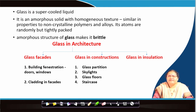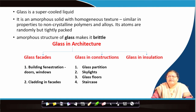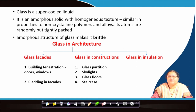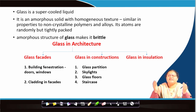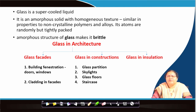We see glass in architecture mostly in three areas: glass in the facades, glass as a construction material, and glass in insulation. Glass in facades is particularly seen in building fenestration — that is, the doors and windows — and also the cladding in facades. There may be glass walls where glasses are fixed to one another, creating a glass facade. Glass can also serve as a partition wall, and glass may come in blocks. Skylights allow light into large enclosed spaces through glass roof treatments, so solar rays can filter in.